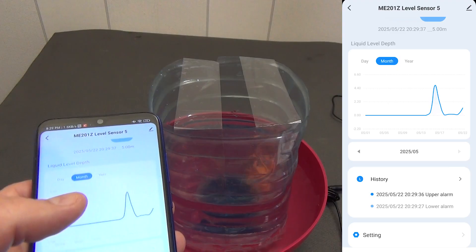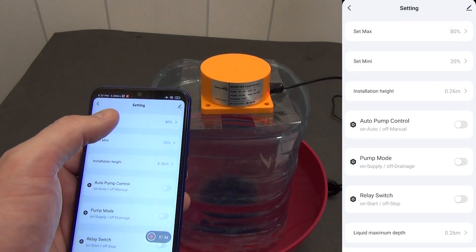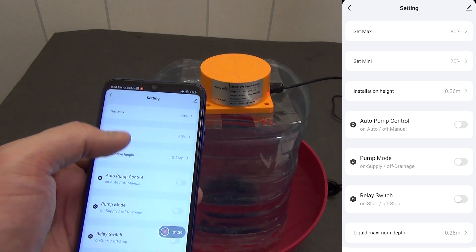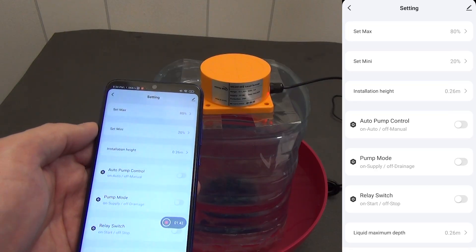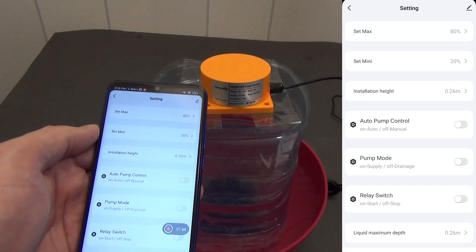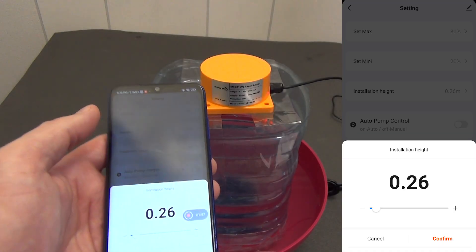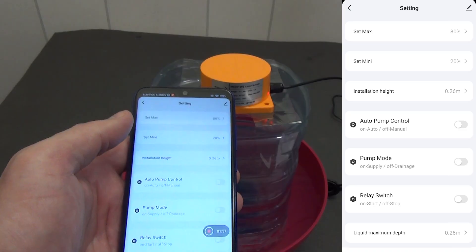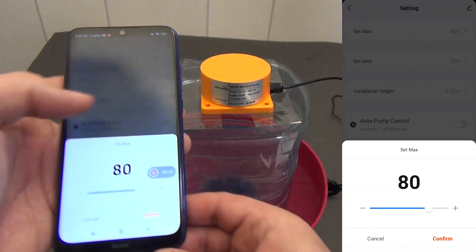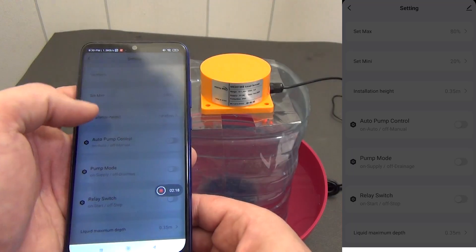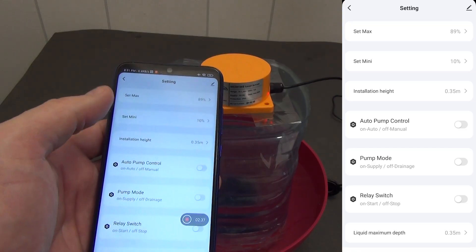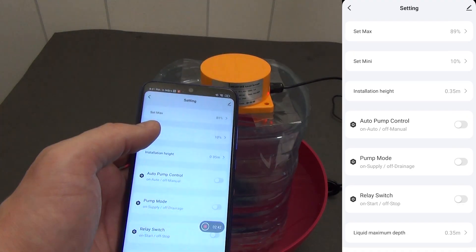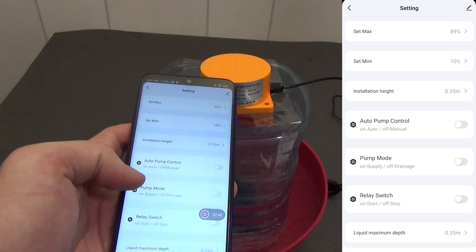Here we can set the following values: Set max, by default 80%. This is the level at which the alarm too high level will be triggered. The next parameter set mini, by default 20%. This is the alarm too low level. It is important to set the installation height parameter correctly. By default it is set to 5 meters. Let me change these parameters for the following tests. I will set the maximum level to 90%, the minimum I will set to 10%. And here is an important parameter, data on the height of your tank. Since the sensor cannot technically calculate how many liters it is, it needs the height parameter.